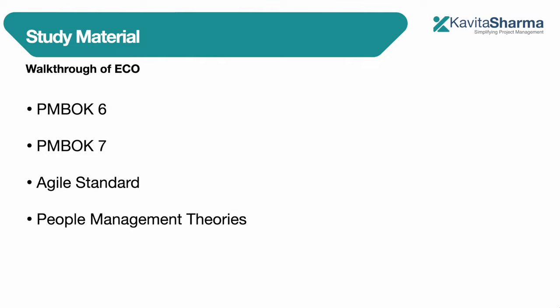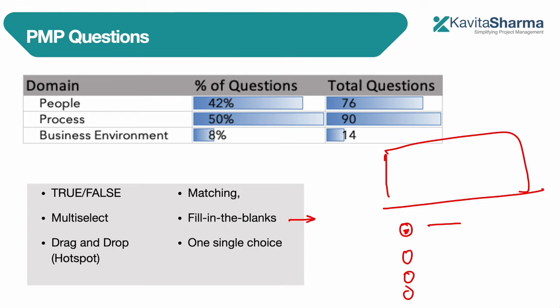PMBOK 7 is also important because PMI has lately started introducing questions from PMBOK 7. As we move toward 2023 and beyond, you're going to see more questions coming from the various models in PMBOK 7. You'll also see many questions from agile, disciplined agile, and hybrid methodology, so reading the Agile standard governed by PMI is important. You should also know how to manage people as a project manager — people management is 42% and takes a lot of your time.